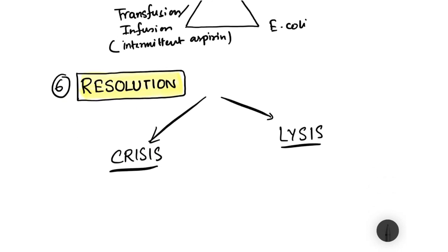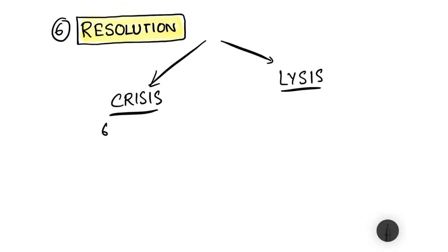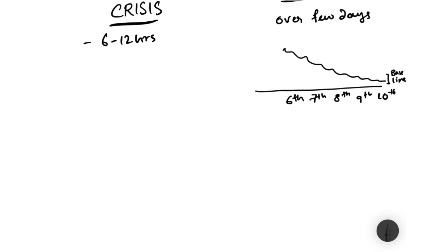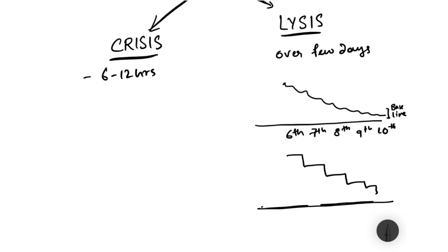Finally, resolution of fever can occur by crisis or by lysis. Crisis means speedy recovery from fever within 6 to 12 hours, occurring after antibiotic treatment or antipyretics. Lysis means the fever goes down gradually over a few days — for example, reaching a peak on day six and slowly declining to baseline by day ten. Lysis can also show a step ladder pattern. Previously in untreated cases, lysis was the common pathway; nowadays with antibiotics it is less frequently seen.